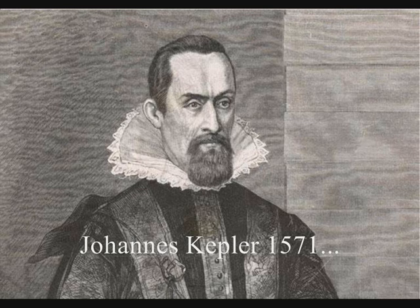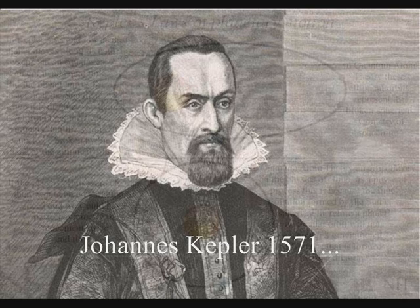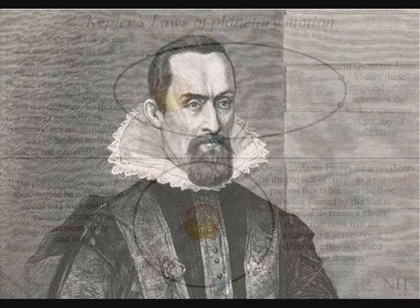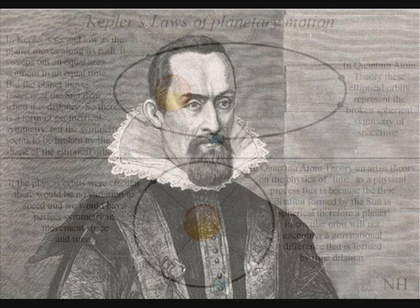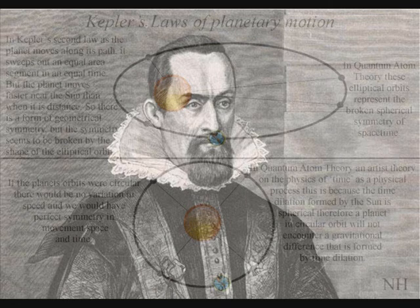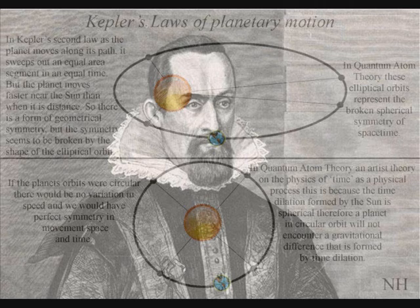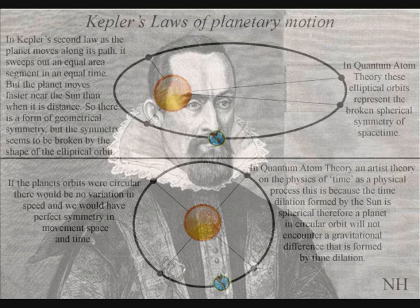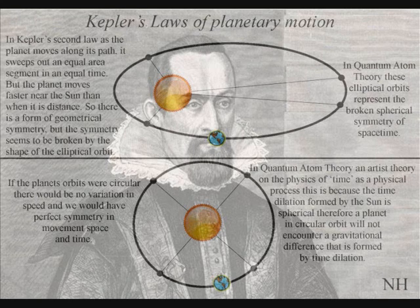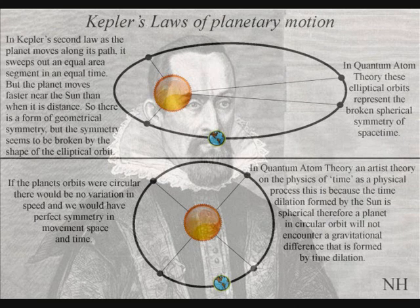Kepler believed that the underlying structure of the universe was built from perfect geometrical forms, but when he observed the motion of the planets, he found that they moved in elliptical orbits with speeds that vary relative to the distance from the sun. The closer the planet is to the sun, the faster it moves, as we can see in the top part of this diagram.